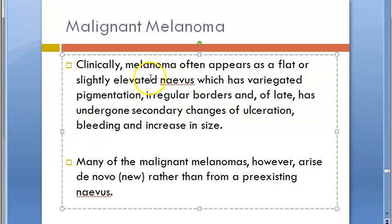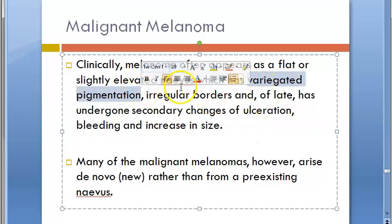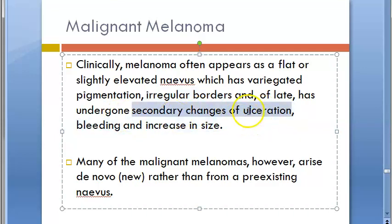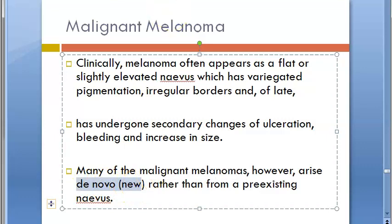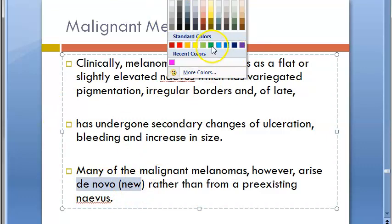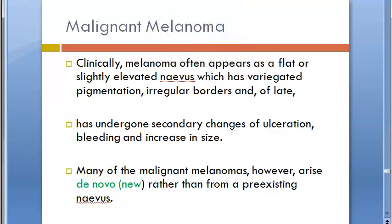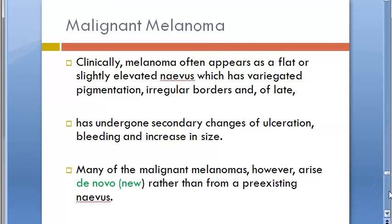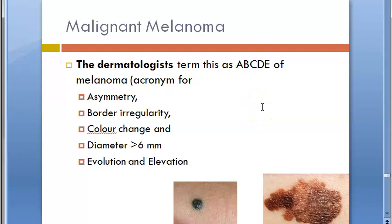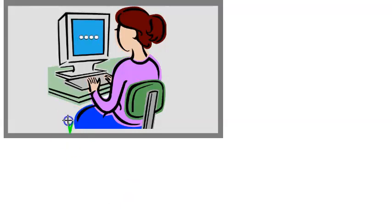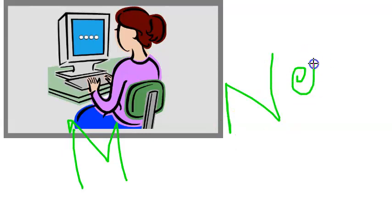Clinically, melanoma appears as a flat or slightly elevated nevus with very variegated pigmentation, varying colors, and irregular borders. Secondary changes such as ulceration, bleeding, and increasing size can occur. These lesions usually appear de novo — meaning they are new moles. A mole that is new, changing in size, or varying in color is worrisome and indicates possible malignancy.